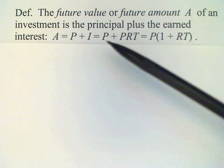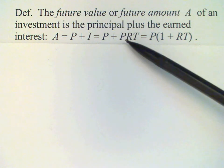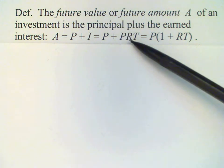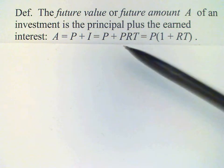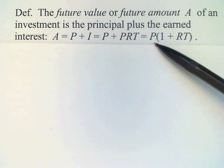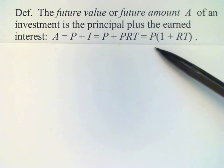But since the interest is equal to principal times rate times time, the P appears in both of these terms, so we can factor it out. And so our formula can also be written as future amount, or future value, is P times the quantity (1 + RT).